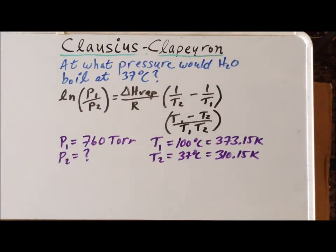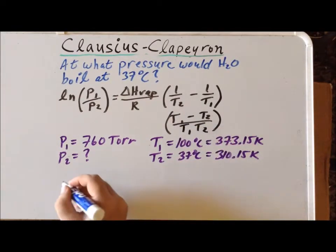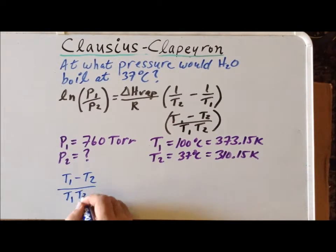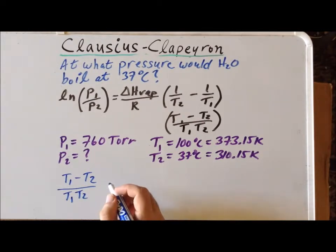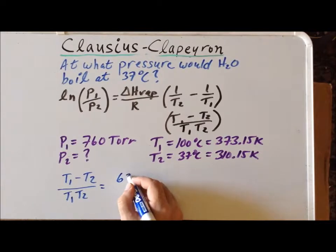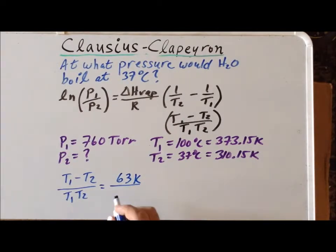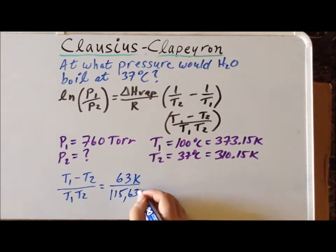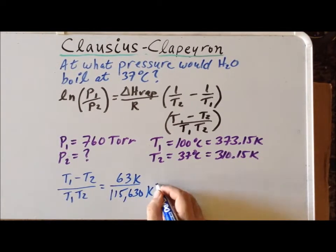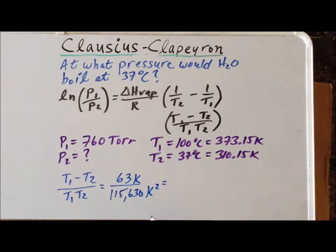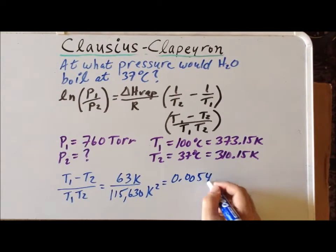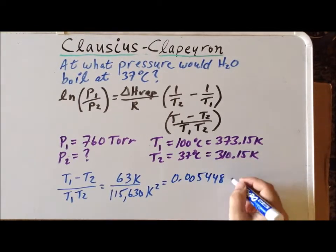Let us first evaluate this expression, T1 minus T2 divided by T1 times T2. We notice that the numerator is 63 Kelvin, and the denominator ends up being 30 Kelvin squared. So the result is going to be 0.00548 inverse Kelvin.